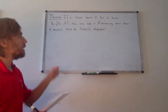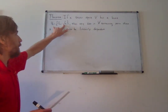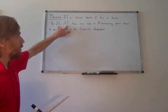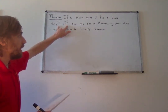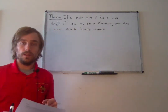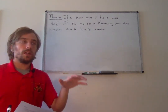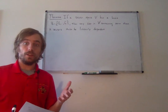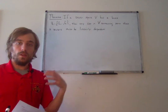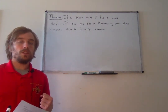This theorem states that if I have a vector space V, and this vector space has a basis B containing n vectors, then any set in V that contains more than n vectors must be linearly dependent. You can see how that mirrors the result we had in Rn, because every basis of Rn is of size n. So if I've got more vectors than a basis would have, then this set has to be linearly dependent.